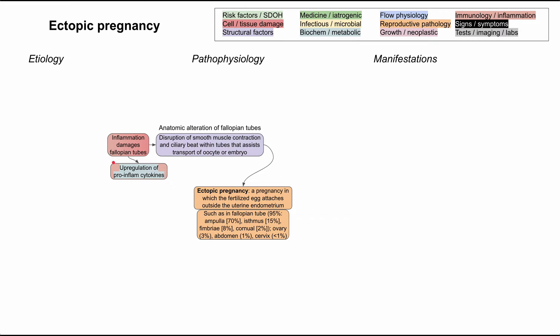In addition, inflammation damages the fallopian tubes and causes upregulation of pro-inflammatory cytokines. Those pro-inflammatory cytokines actually promote implantation of the embryo, invasion of the embryo into the surrounding space, and angiogenesis. So pro-inflammatory cytokines also play a role in causing the embryo to implant in the wrong site — not only are you disrupting the normal function of the fallopian tubes, but you're also promoting embryo implantation prematurely.